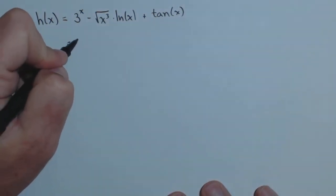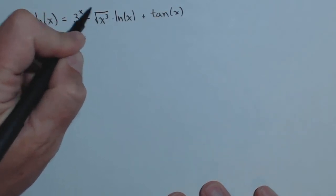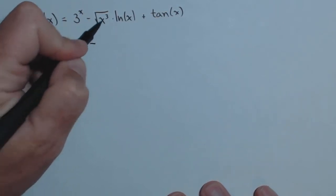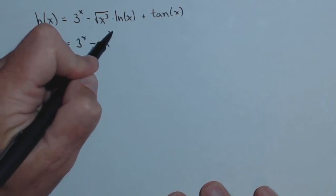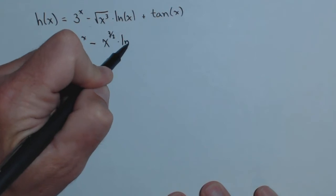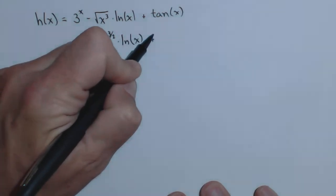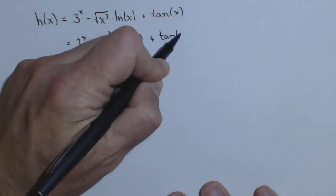Before you take the derivative, I would recommend rewriting this as a power function. Square root of x cubed can be rewritten as x^(3/2) times ln(x). None of the other ones really need to be rewritten.